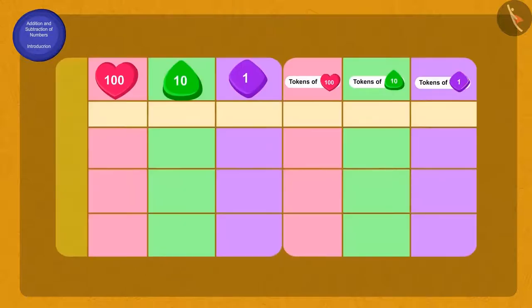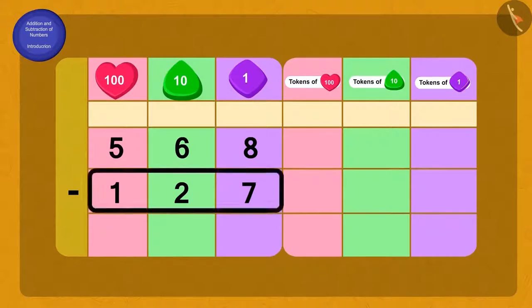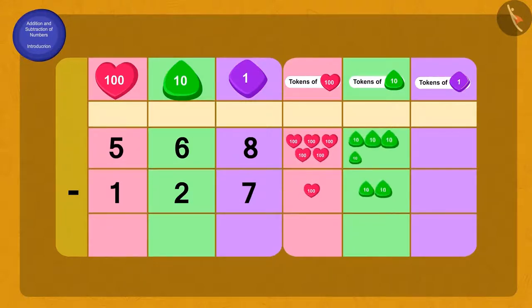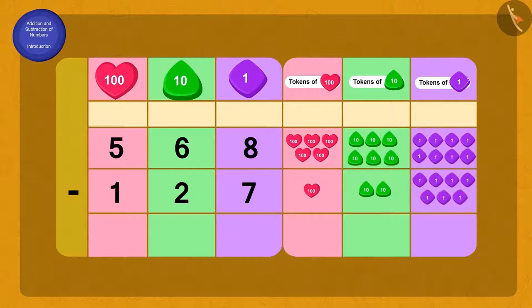To know the number of sheep left with Appu, we will subtract 127 sheep from 568 sheep. We will write 568 and 127 this way using 100, 10, and one digit places in the place value chart. What should we do now?